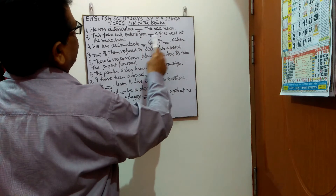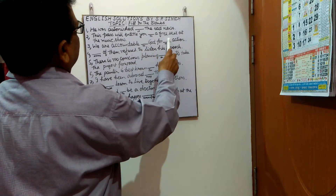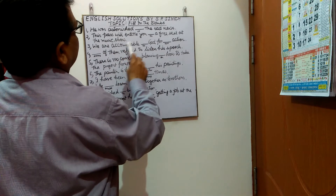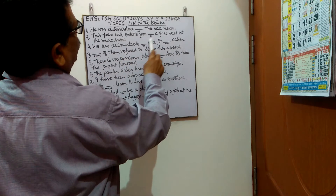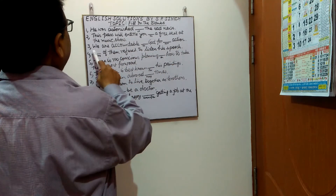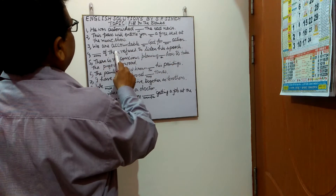Third sentence: 'We are accountable ___ God for ___ action.' In the first blank you have to put 'to' and in the second 'our'. The sentence will be: We are accountable to God for our action.